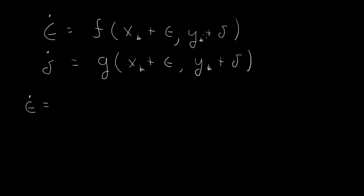So we have f at x star, y star as the constant term. X star and y star is a fixed point, so this constant term is going to be 0. Plus the first order terms: epsilon times partial f with respect to x at the point x star, y star.